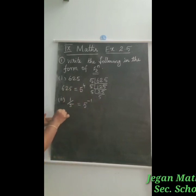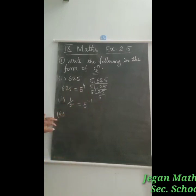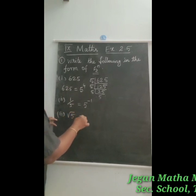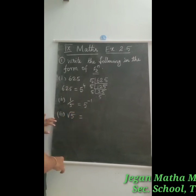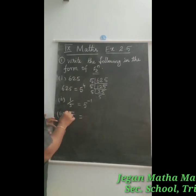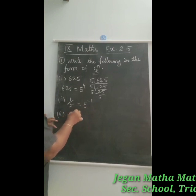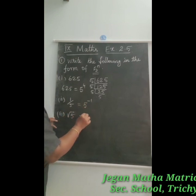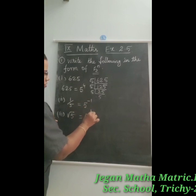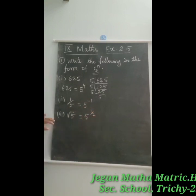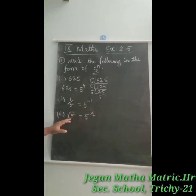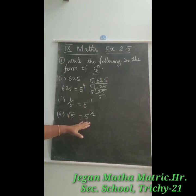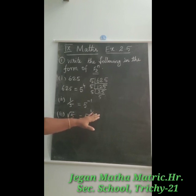The third question is root 5. To change root 5 into 5 power n, the square root becomes a power of 1 by 2. So root 5 is equal to 5 power 1 by 2.